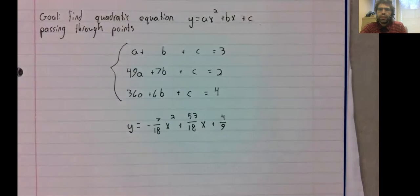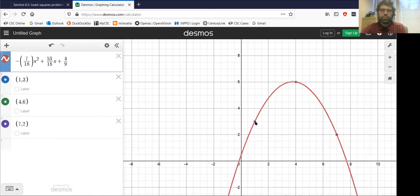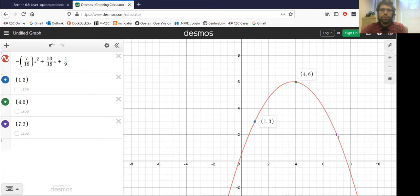And we can verify on decimals, for example, this parabola that we found does indeed pass through the points it's supposed to pass through.